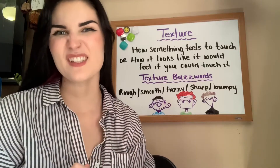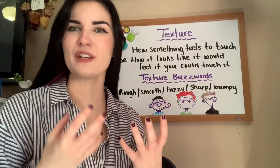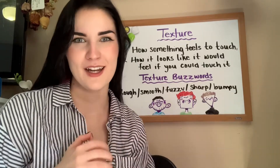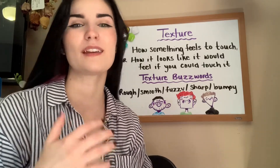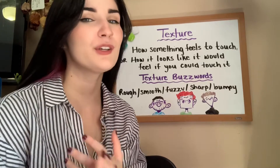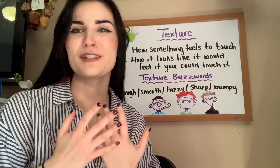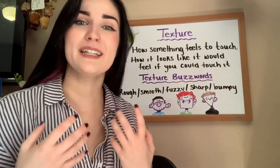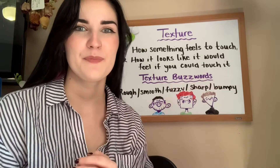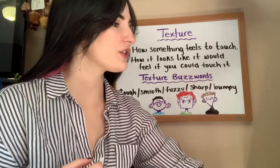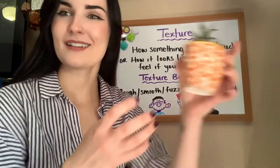Texture is how something would feel if we were to touch it, or how we would think it would feel if we could touch it. The first type would be a 3D texture — if I can actually reach out and feel the bumps on my plant here, that makes it a 3D texture.